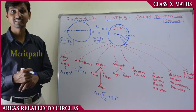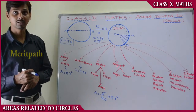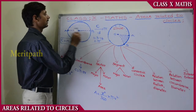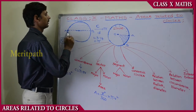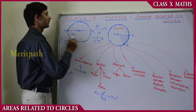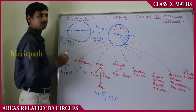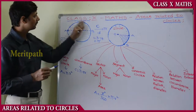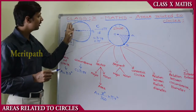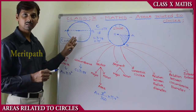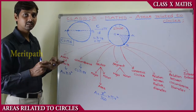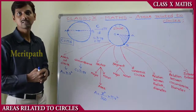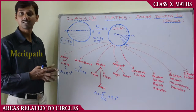Interior and exterior of the circle: the region bounded by the inside of the circle is called the interior of the circle, and the region formed by the outside of the circle is called the exterior of the circle.